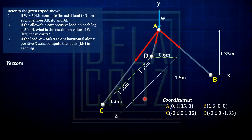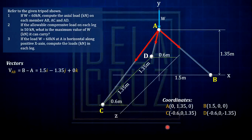Now we can solve the vectors. For vector AB, that is just the coordinates of B minus the coordinates of A — because B is the head and A is the tail. By subtracting the coordinates: B(1.5) minus A(0) = 1.5 i; 0 minus 1.35 = negative 1.35 j; and 0 for k. The IJK are just direction indicators.